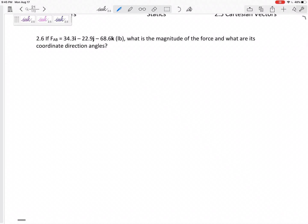All right, let's look at this problem. If the force is 34.3i minus 22.9j minus 68.6k, so if it's already given to me as a Cartesian vector in ijk form, what is the magnitude of the force? That's easy. And what are its coordinate direction angles?